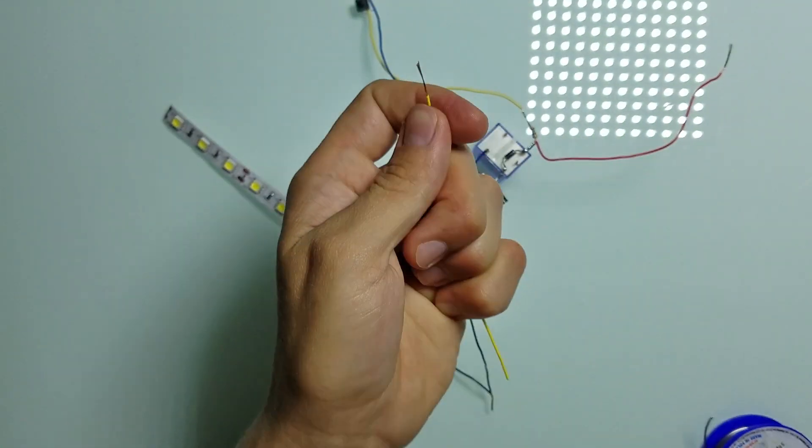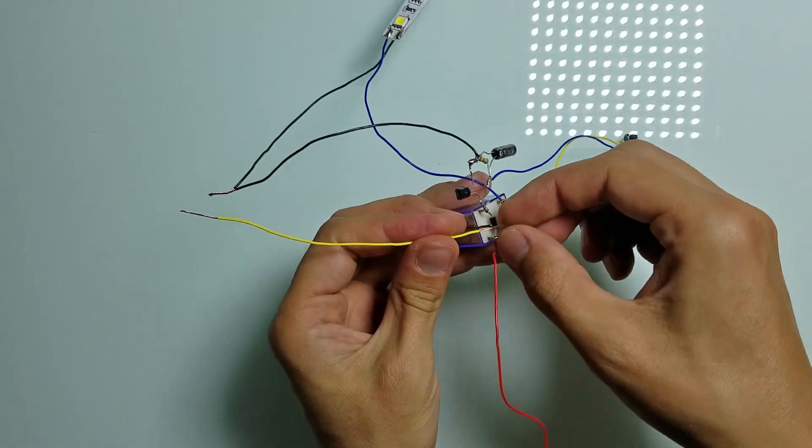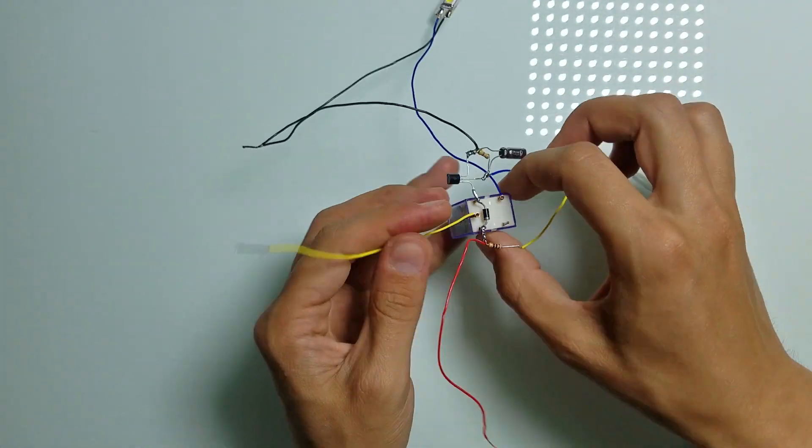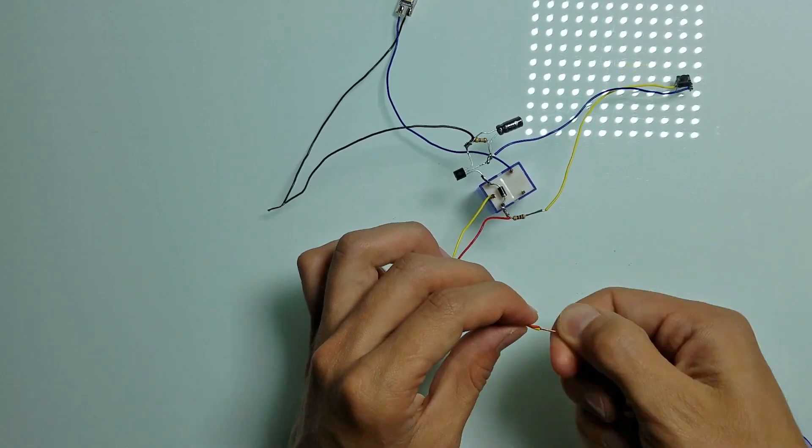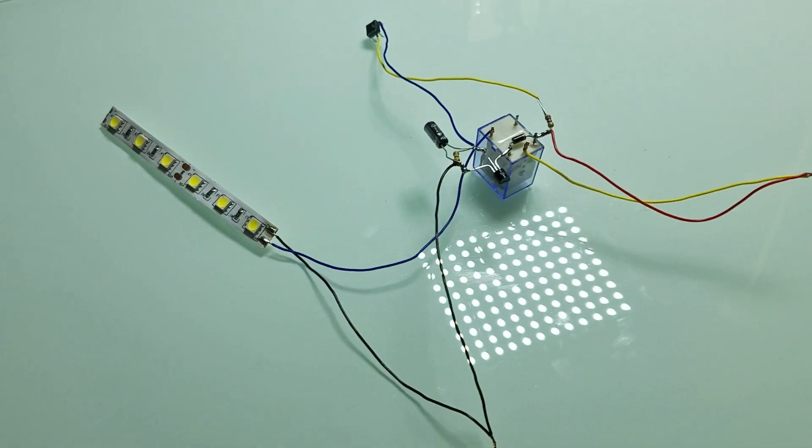And now we're left with the last wire. We need to connect it to the common lead of the relay and to the positive wire. And it is ready.